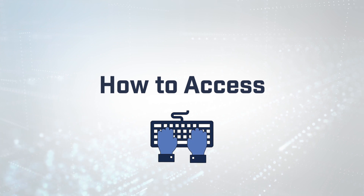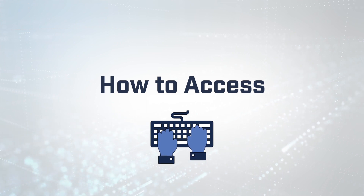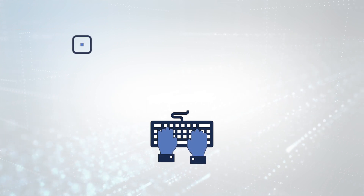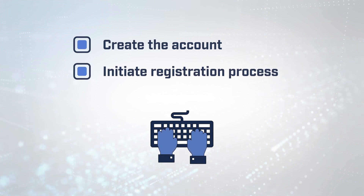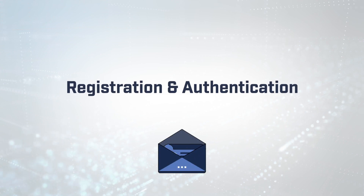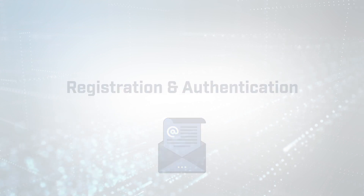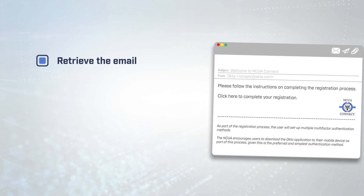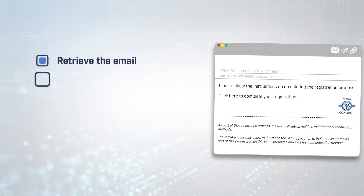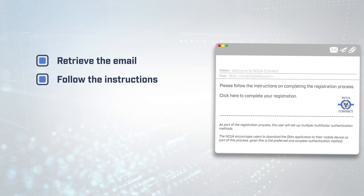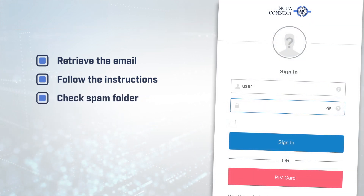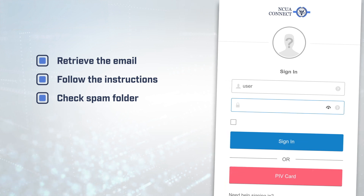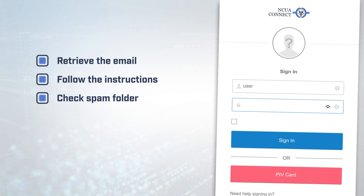To access NCUA Connect, your organization's NCUA Connect administrator must first create the account and initiate the user registration process. Next, the user should retrieve the email sent from NCUA Connect and follow the instructions on completing their registration process. If an email is not received, the user should check their spam folder and then add the sender as a trusted email.